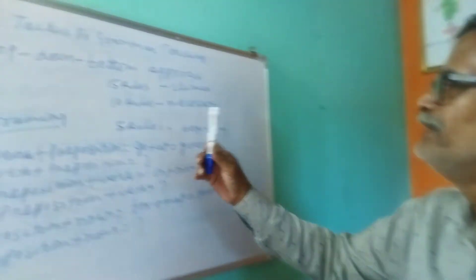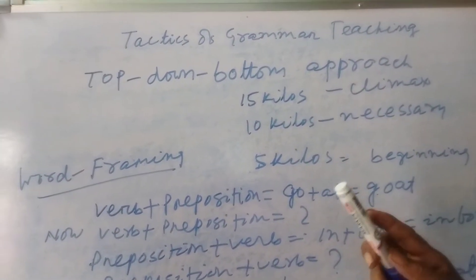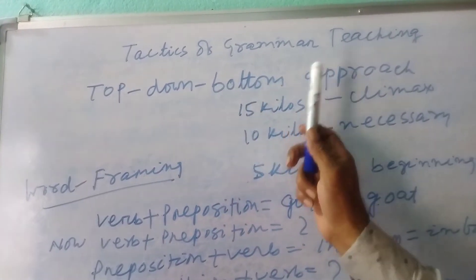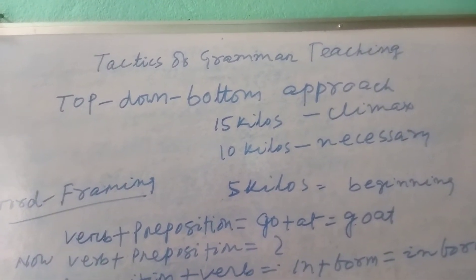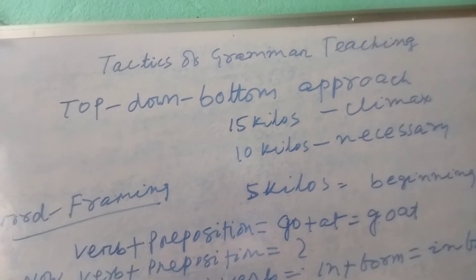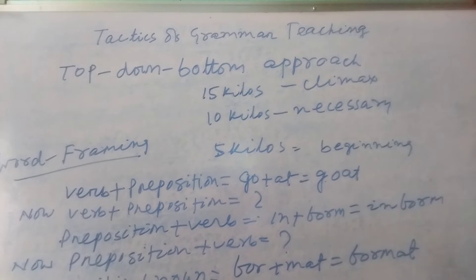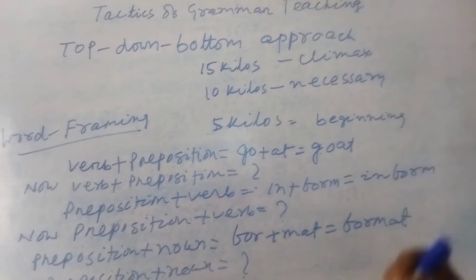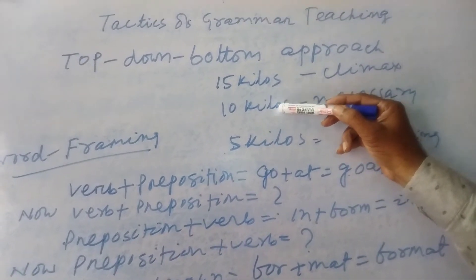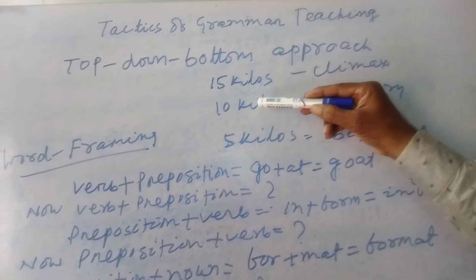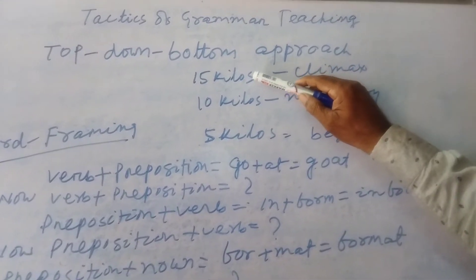I have written here an approach — apart from noticing or the inductive method — that is my own creation: the top-down bottom approach, or bottom-up top approach. Suppose in a class, in terms of their syllabus or curriculum, a student has to reach ten kilos. The teacher has to start from five kilos — five, six, seven, eight, nine, ten — and then reach up to fifteen kilos. So: five kilos is the beginning, ten kilos is the target, and fifteen kilos is the climax.